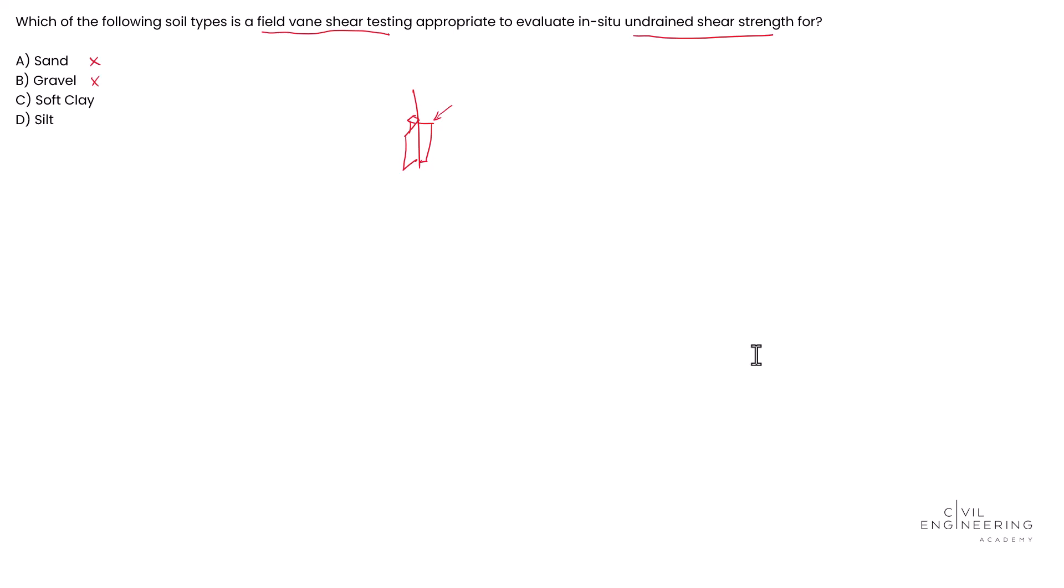A soft clay is a cohesive soil, which means it has significant undrained shear strength. And the vane shear test is highly suitable for this. So I'm going to put a checkmark on that one because it can help provide accurate measurements of the soil's undrained shear strength in basically the soil as it is in-situ, as it sits there undisturbed.